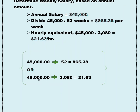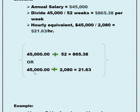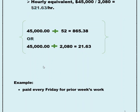Here's the basic calculation broken down a little bit easier to read. $45,000 a year divided by 52 weeks gives you $865.38 per week, and that's your gross pay. The hourly equivalent: you divide your $45,000 by your 2,080 hours per year, and that gives you $21.63 per hour. An example of this payroll cycle is that it's paid every Friday, usually for the prior week's work.